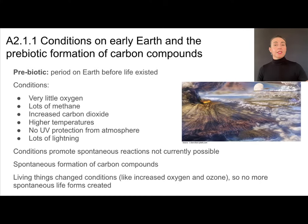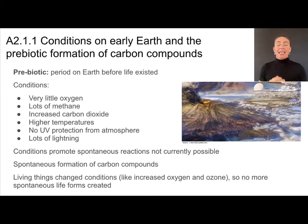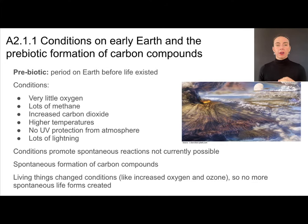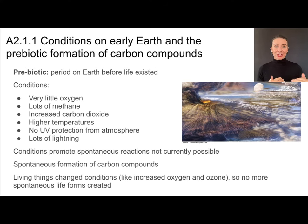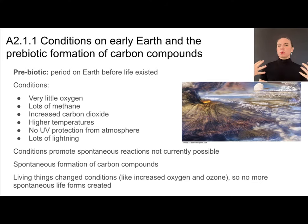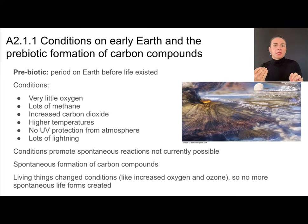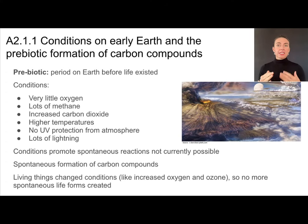In order to talk about the origin of cells, we first need to understand the origin of all the complex molecules that make up cells, like proteins and nucleic acids. And in order to understand how those were formed, we need to travel back in time to what we call prebiotic earth — the earth during the time period before life existed. Early earth or prebiotic earth is very different than it is now: very little oxygen, lots of methane, really hot, a lot of carbon dioxide, no atmosphere, so UV radiation from the sun was very intense, and there was lots of lightning.